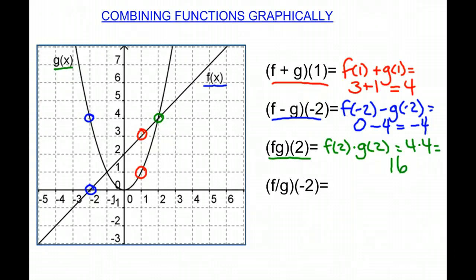And our last one, f divided by g of negative 2, or f of negative 2 divided by g of negative 2. So we look at our negative 2, which we've already found to be 0 and 4. So we have our f, which is 0, divided by our g, which is 4. So 0 divided by 4 is 0. Therefore, f divided by g of negative 2 equals 0.